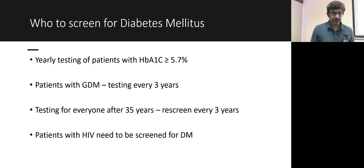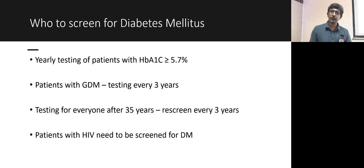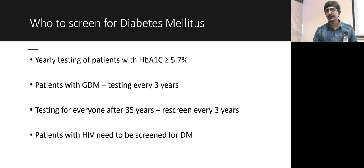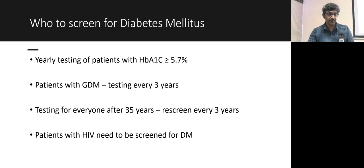In patients with these risk factors, screen with HbA1c yearly. Patients with a history of gestational diabetes mellitus are at very high risk of developing type 2 diabetes — screen them every three years. This screening applies to everyone after 35 years of age. Patients with HIV should also be screened for diabetes.